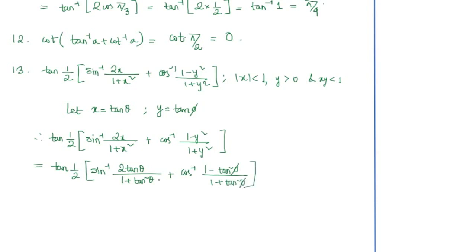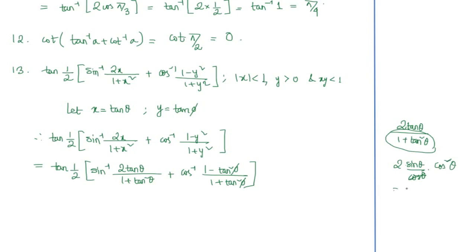Now let us examine each part in detail. For 2tan θ/(1+tan²θ): since 1+tan²θ = sec²θ, moving sec²θ to the numerator gives cos²θ. Writing tan θ as sin θ/cos θ, the cos²θ and cos θ cancel, leaving 2 sin θ cos θ, which equals sin 2θ. That is why we assume x = tan θ — it allows efficient reduction when sin inverse is present.